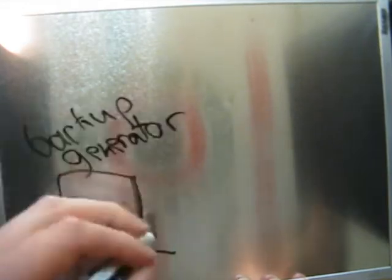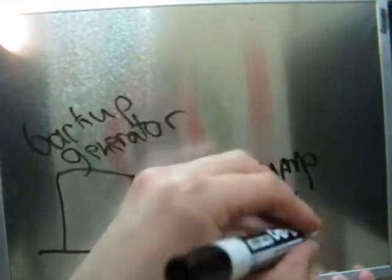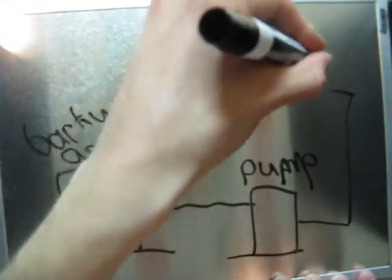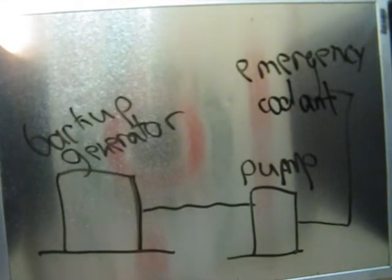Sometimes nuclear reactors use backup generators. These backup generators power things like pumps, and these pumps then pump coolant through the reactor for emergency cooling situations.